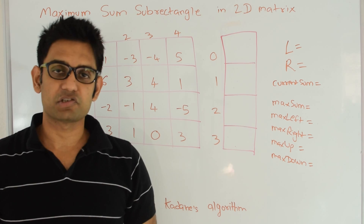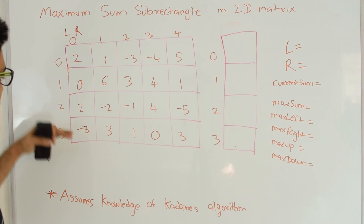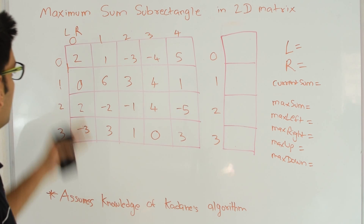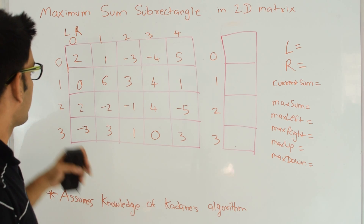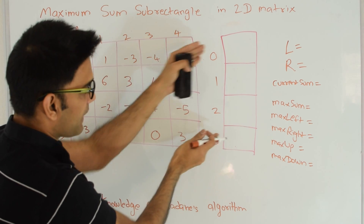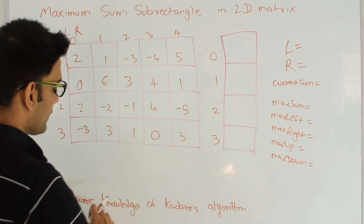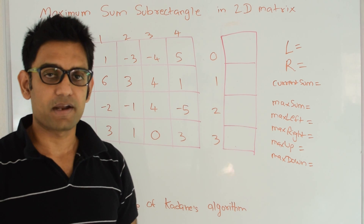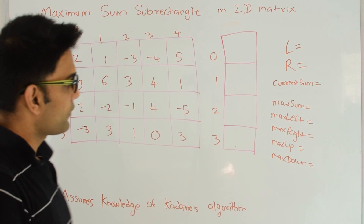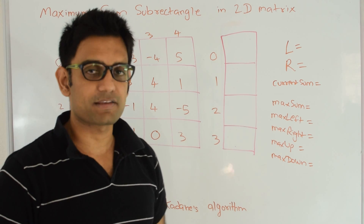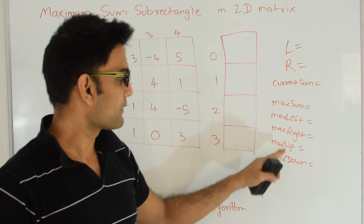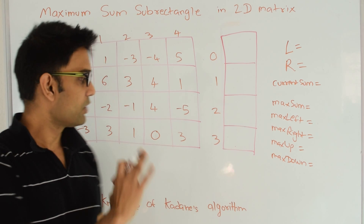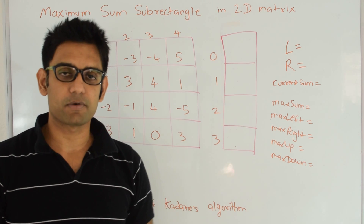We'll have a one-dimensional temporary array whose length is the same as the total number of rows in the two-dimensional matrix, so length 4. We'll have two variables, left and right, which will move on the columns. We keep the column sum from left to right for each row in this temporary array, then apply Kadane's algorithm to find the maximum sum sub-array. We also have five variables to store the maximum sum found so far and the left, right, up, and down bounds of the rectangle with maximum sum. Note that the matrix must have at least one positive number for this algorithm to work.